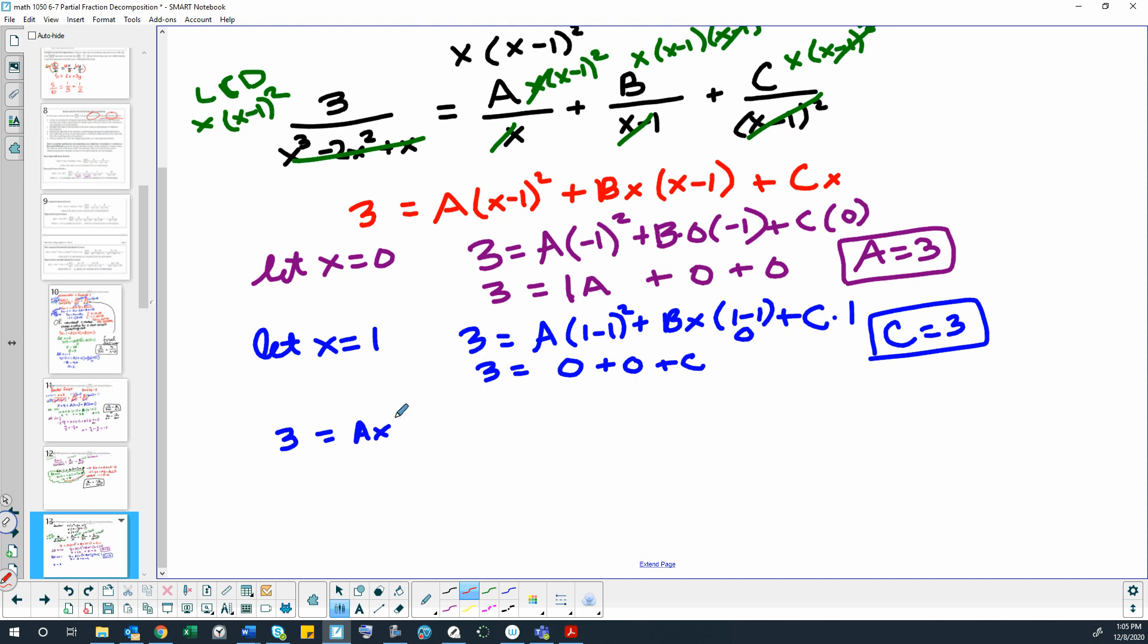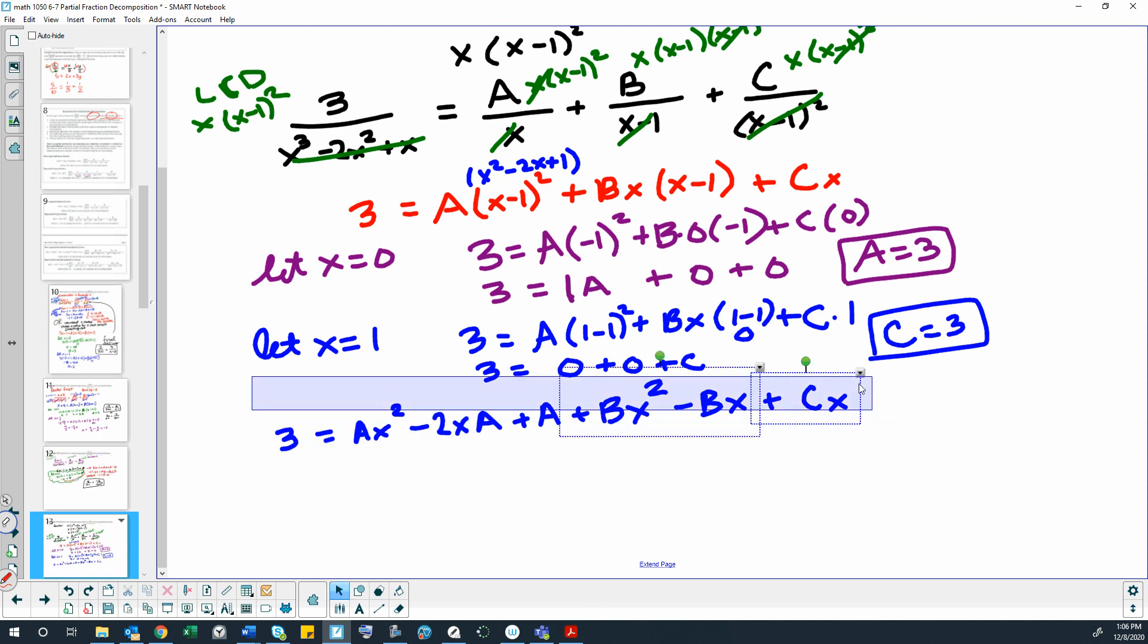So that would be 3 equals and we would have A x squared minus 2x times A and then this is a negative 1 times negative 1 which is positive 1 plus A. What I just did was took the original problem which was x squared minus 2x plus 1 and I distributed my A through that. And then I'm going to distribute the B, so that would be B x squared minus B x, and then I have Cx.